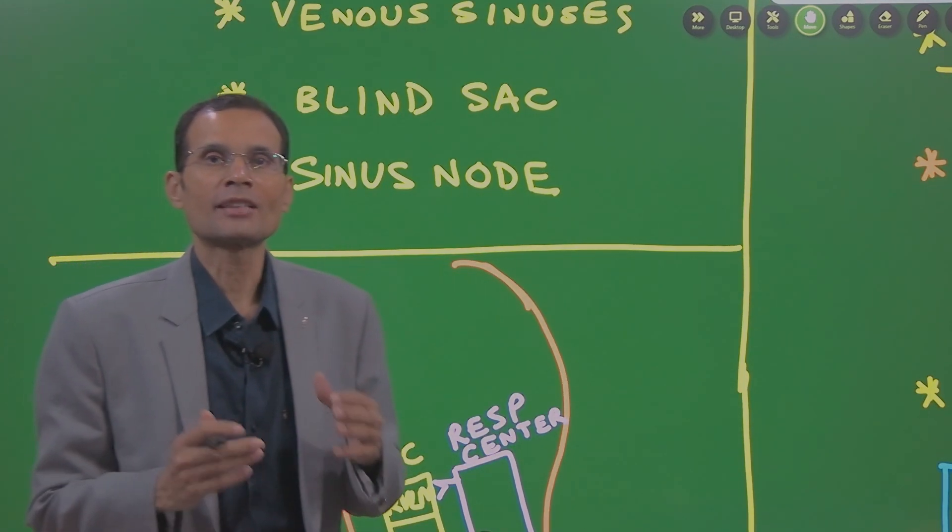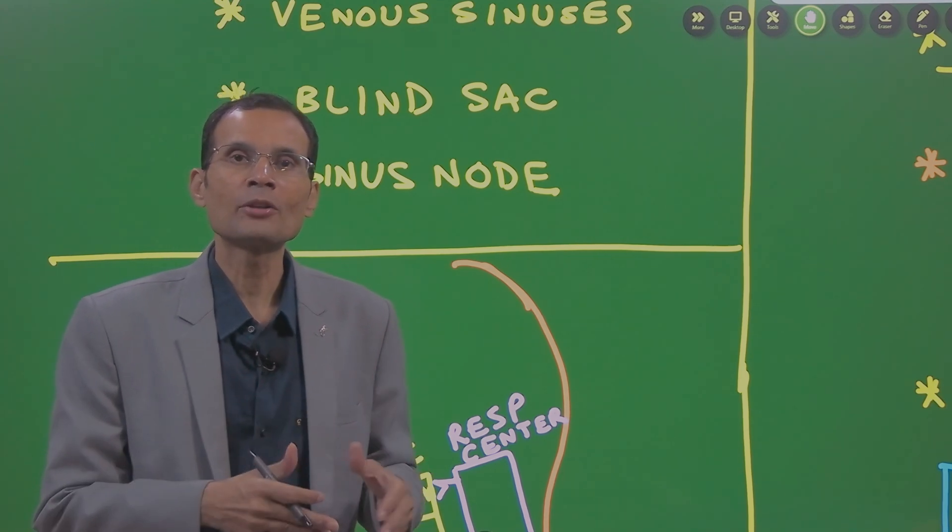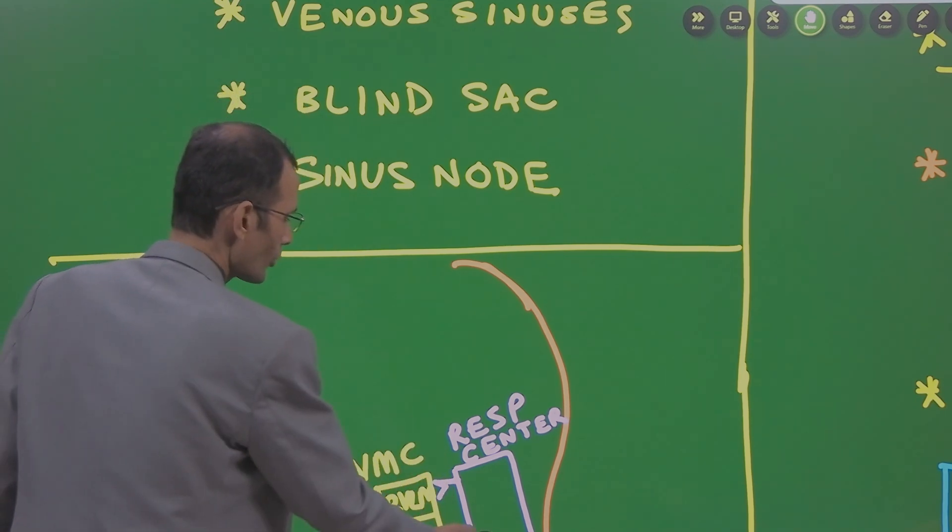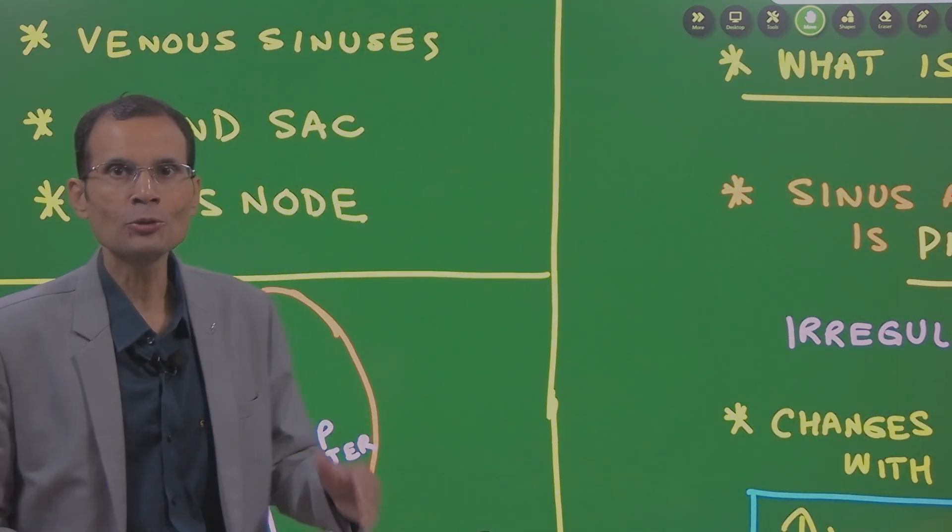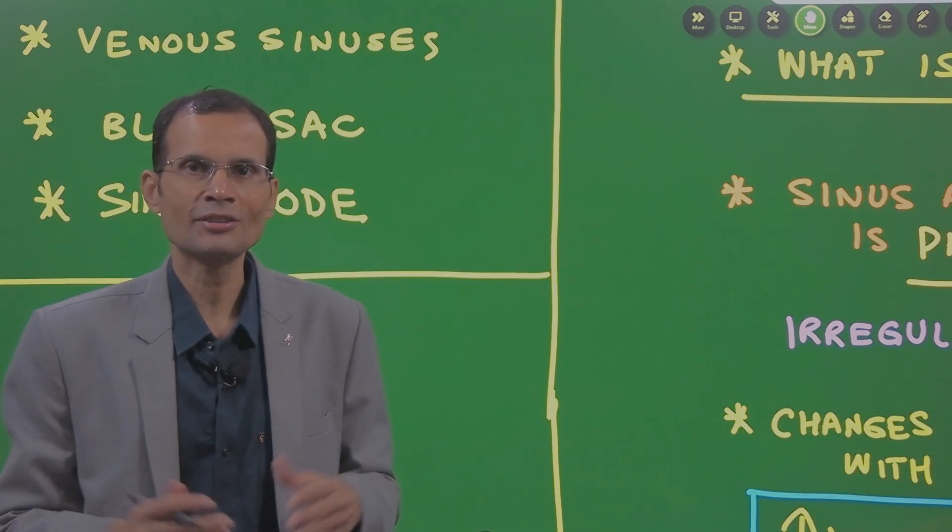And of course, sinus node or SA node, sinoatrial node. In this context, if you have a short note, do not write all these meanings. This was just an additional thing.